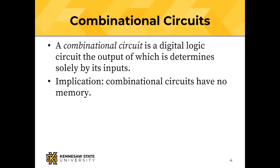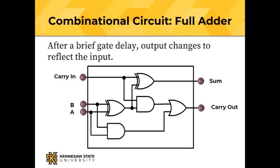Here is a full adder. If the inputs are all off, both outputs are off. When an input comes on, the outputs change. In this animation there's a half-second delay between the time the inputs change and the time the outputs change. In a real digital logic circuit that delay would be in nanoseconds. There is no memory at all in that circuit. If the inputs go away, the outputs go away very shortly after. So no memory at all.